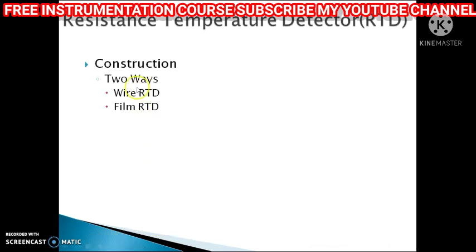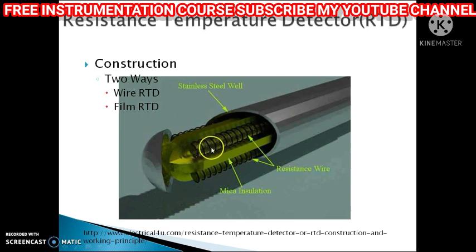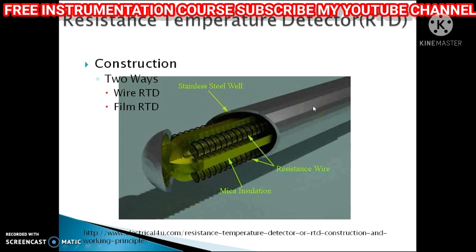Let's look at the construction of RTD. There are two ways in which they are manufactured: the wire RTD and the film RTD. The wire RTD is the classical RTD proposed by C. H. Hare in 1932. It has a helical coil of platinum wound on a crossed mica base. The mica is used for electrical insulation. It was initially covered with a glass capillary, but nowadays it is covered with a stainless steel capillary which withstands high pressures.